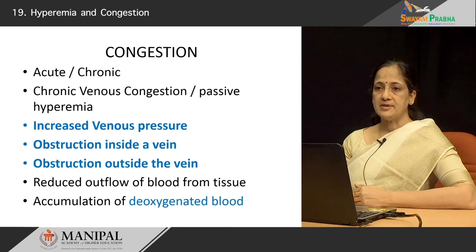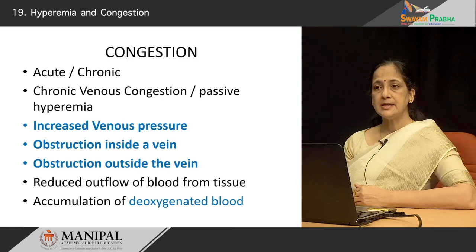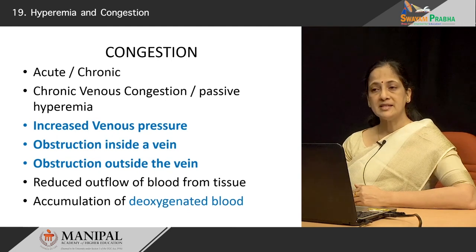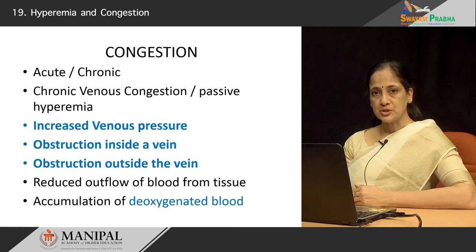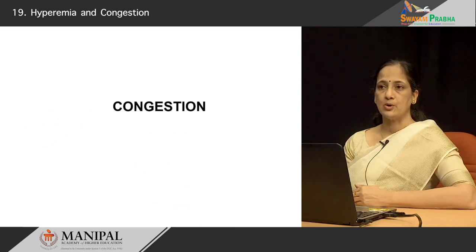What happens because of this venous congestion? One, there will be increased venous pressure, which can cause congestion within the tissue. Two, there can be obstruction inside a vein — for example, if a thrombus were to develop in a vein, it would cause congestion. Thirdly, the vein may be compressed from the outside, for example by a growing tumor. Reduced outflow of blood from the tissue results in accumulation of deoxygenated blood and therefore cyanosis.